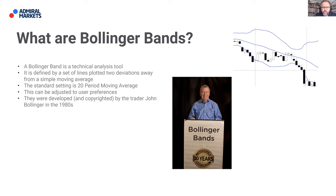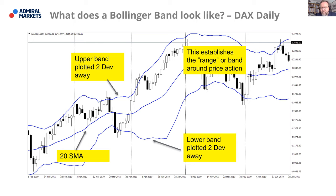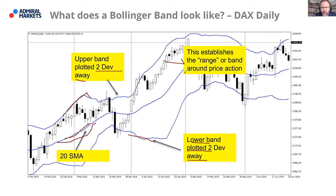How does it appear on a chart? You have a 20-period simple moving average in the middle, then an upper band plotted two standard deviations above and a lower band plotted two deviations beneath. This establishes the range or band around the majority of price action - not all of it, but approximately 90% of price action. Bollinger Bands are quite popular because they're simple and ubiquitous across a wide range of trading platforms.